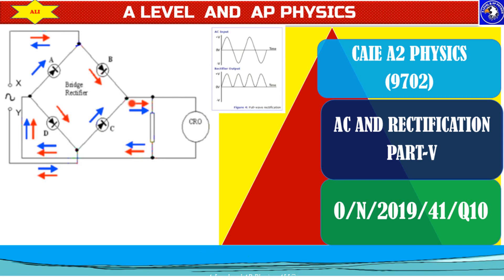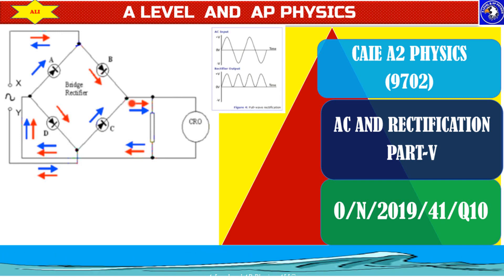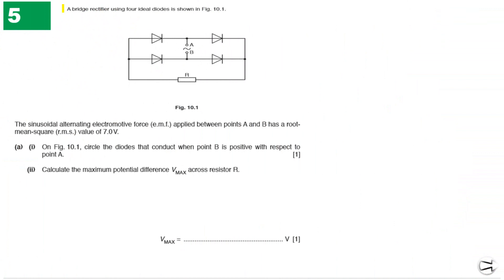In today's class, we will explore the bridge rectifier circuit — specifically a special case when the diodes are not arranged in a diamond shape. A bridge rectifier circuit is given with four ideal diodes, and we can see how they are connected. If you look at the shape of this arrangement, it doesn't look like a diamond, but it is still a bridge rectifier circuit.